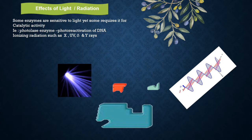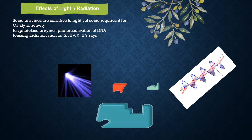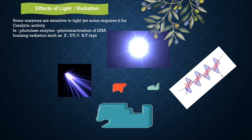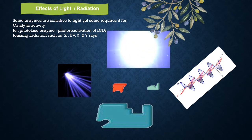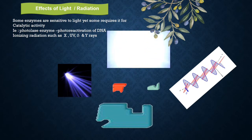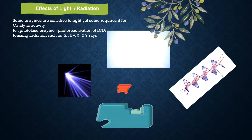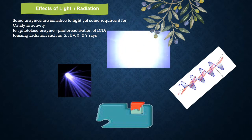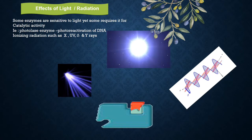The effects of light and radiation on enzymes. Some enzymes are sensitive to light, yet some require it for catalytic activity. The effects of enzymatic activity on a cofactor and substrate can be affected by light or radiation, such as X-rays, ultraviolet rays, beta rays, and gamma rays.